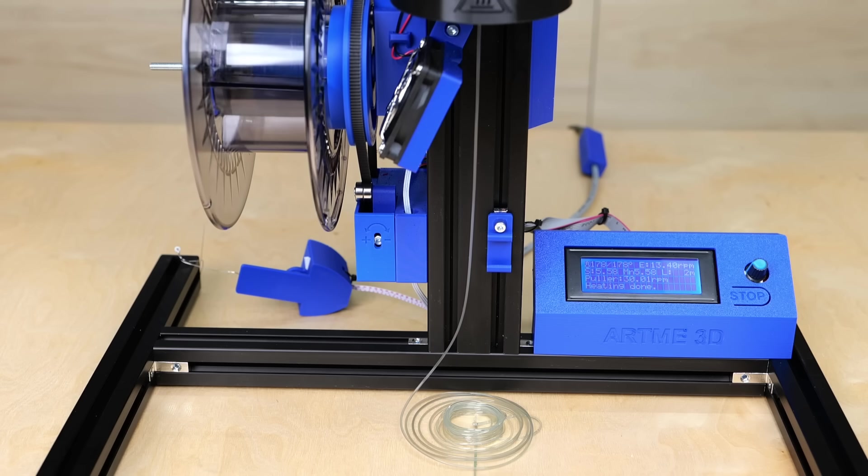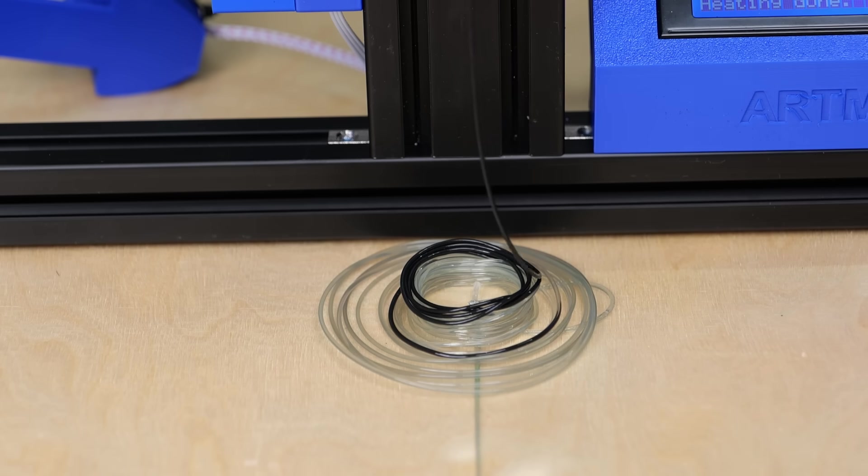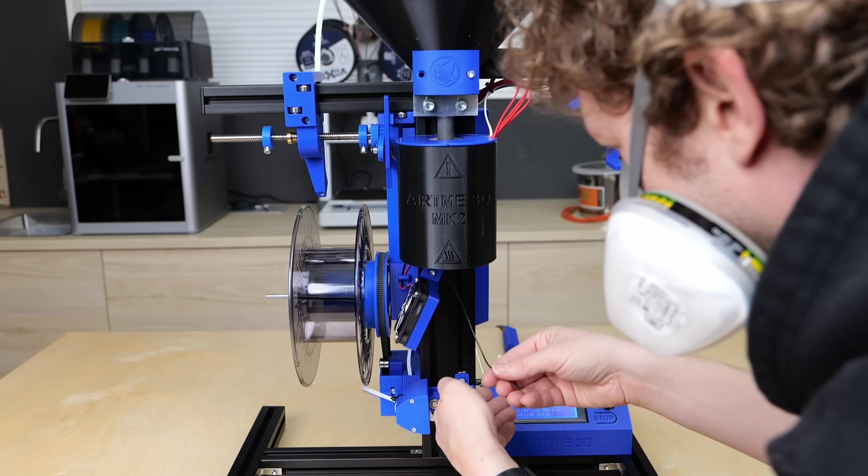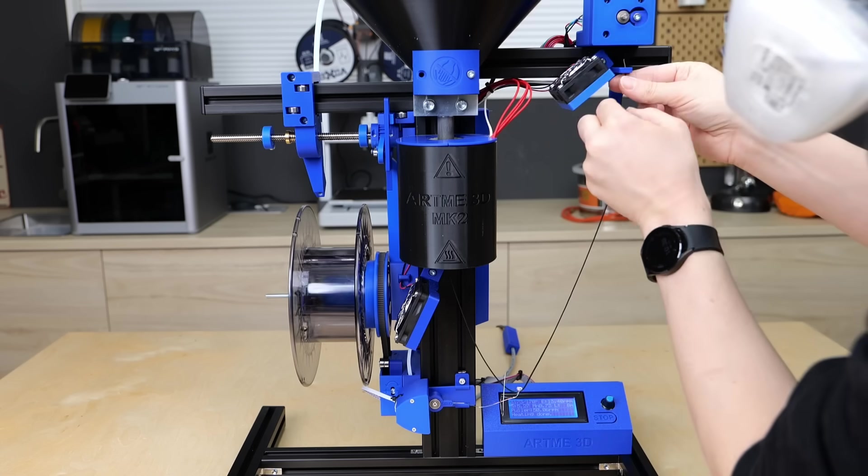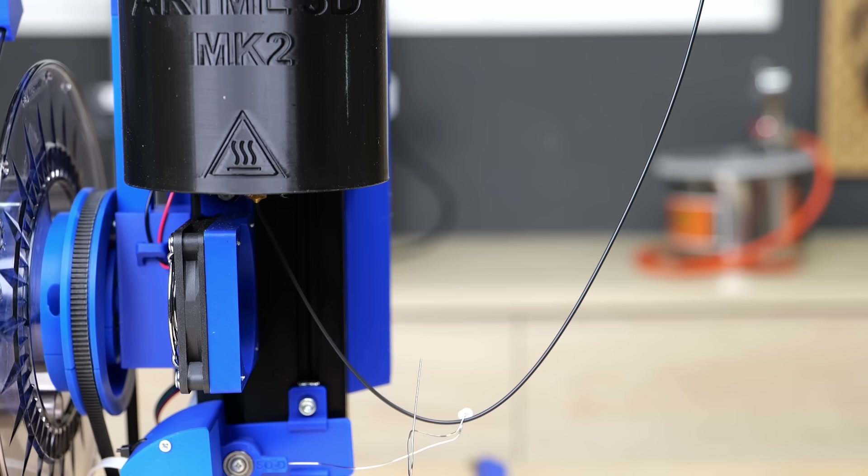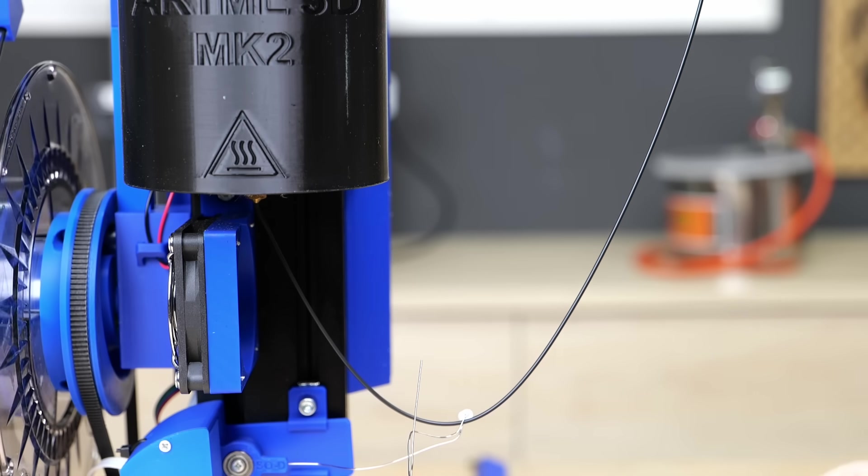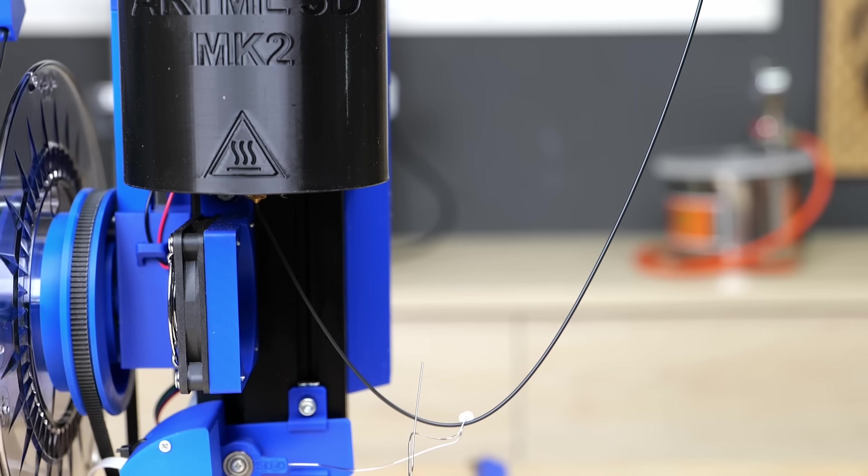The first material that came out of the nozzle was the leftover from the last experiment. At some point, the extruded filament turned from clear into black, indicating that we transitioned to our shredded material. I guided the filament through the position sensor to the puller, which pushes the material to the filament spool. Even though I already lowered the extrusion temperature, I directly noticed that the strand of material was significantly thinner than the 1.75mm target diameter we need for 3D printing.